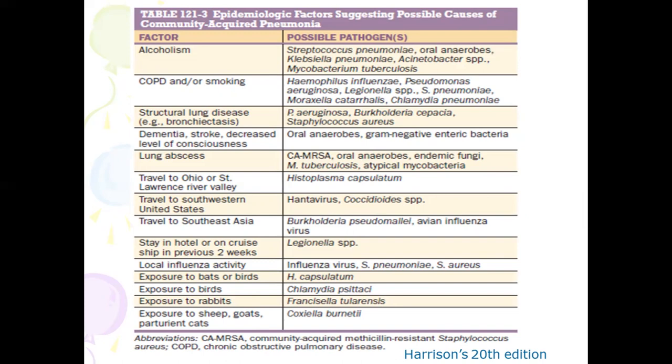In patients with lung abscess, it could be community-acquired MRSA. If the patient has a history of travel to the southwestern United States, it could be Hantavirus. Recent travel to Southeast Asia could suggest Burkholderia pseudomallei. Exposure to bats or birds raises the possibility of Histoplasma capsulatum. You should take a proper history about travel, food habits, previous diseases, and exposure to birds, rabbits, sheep, or cats.